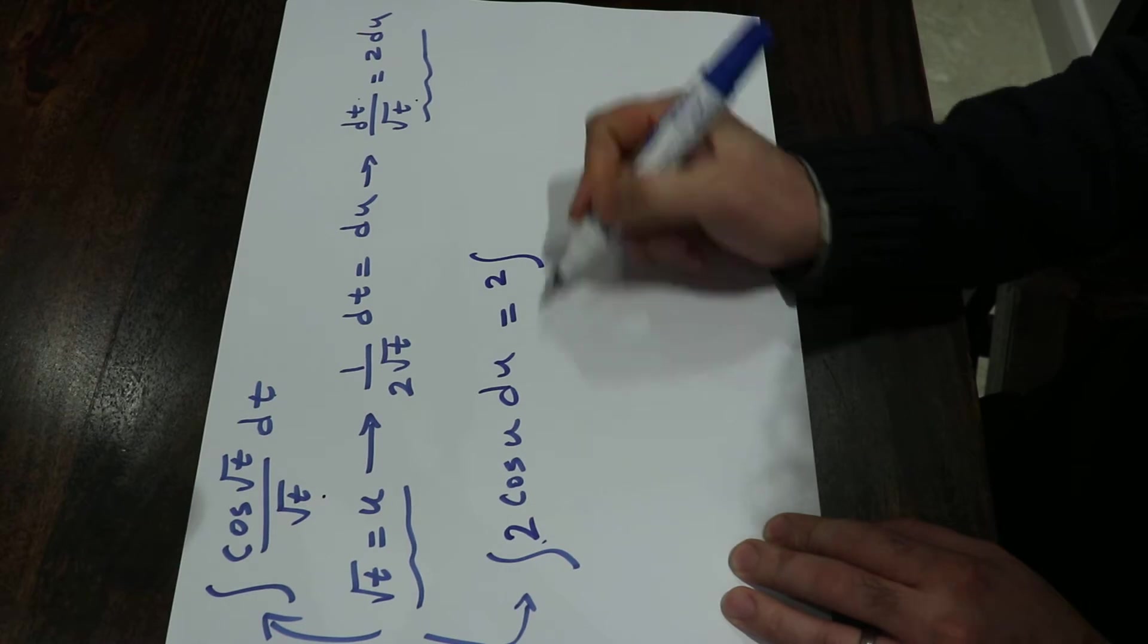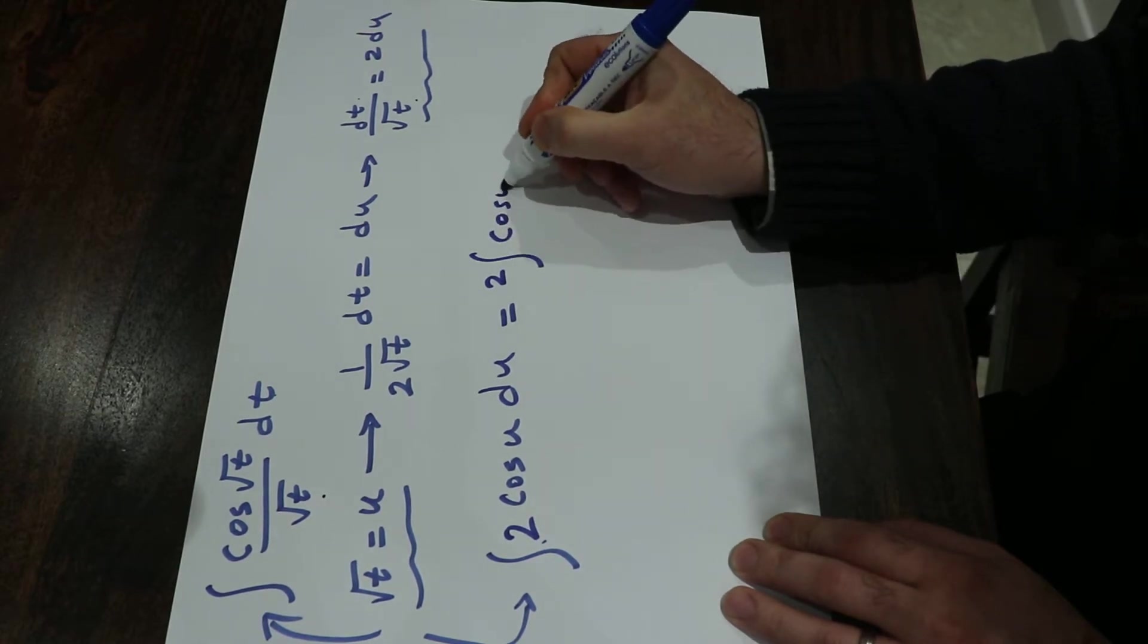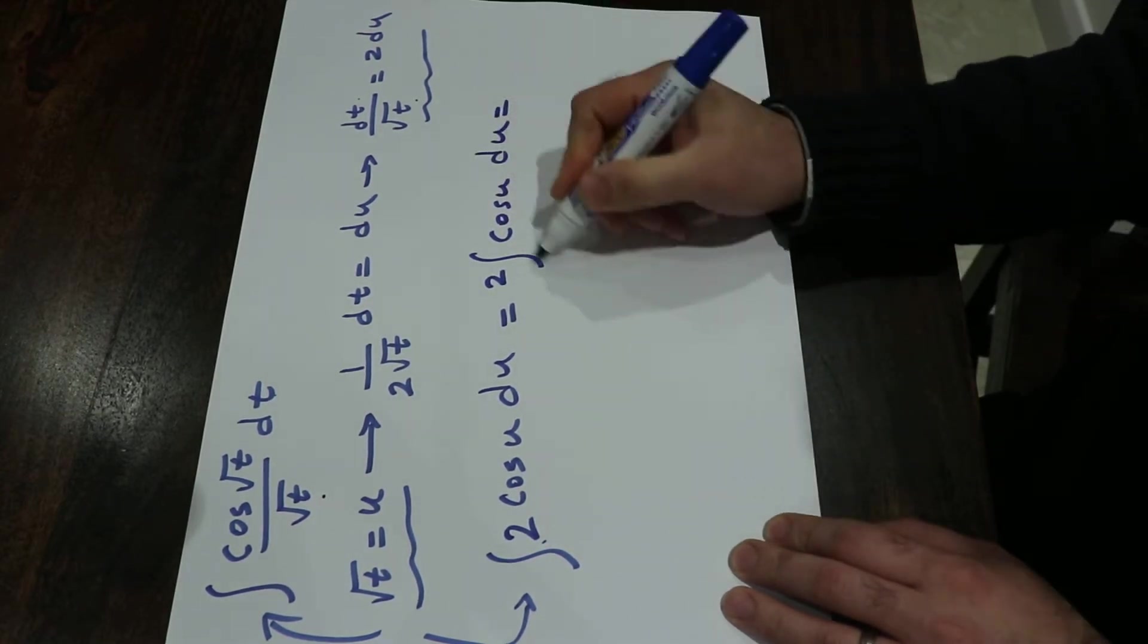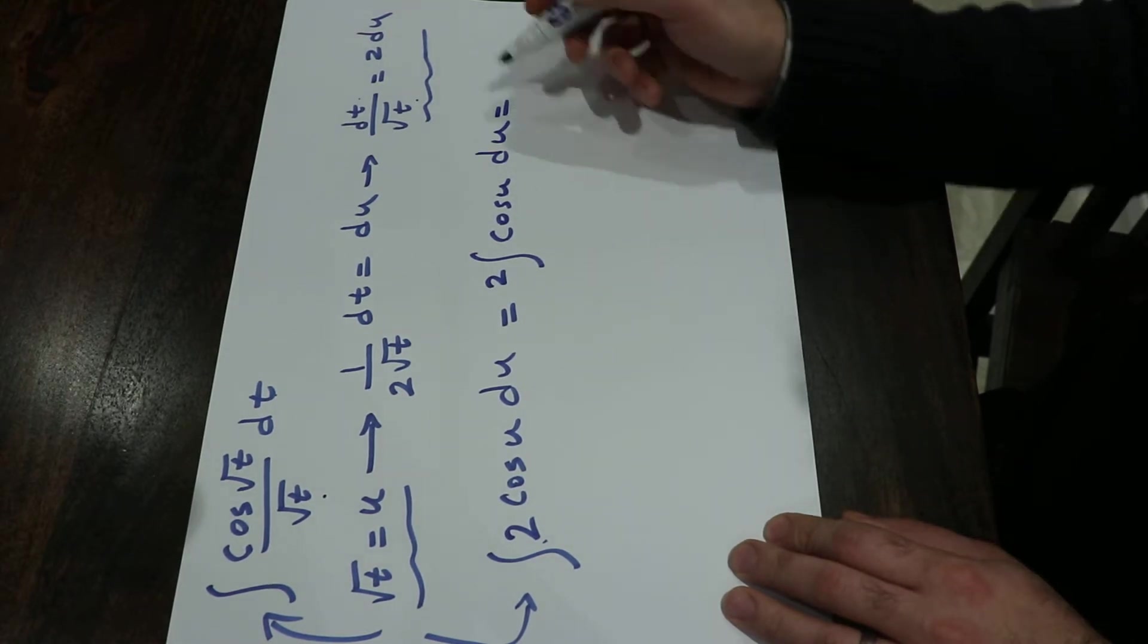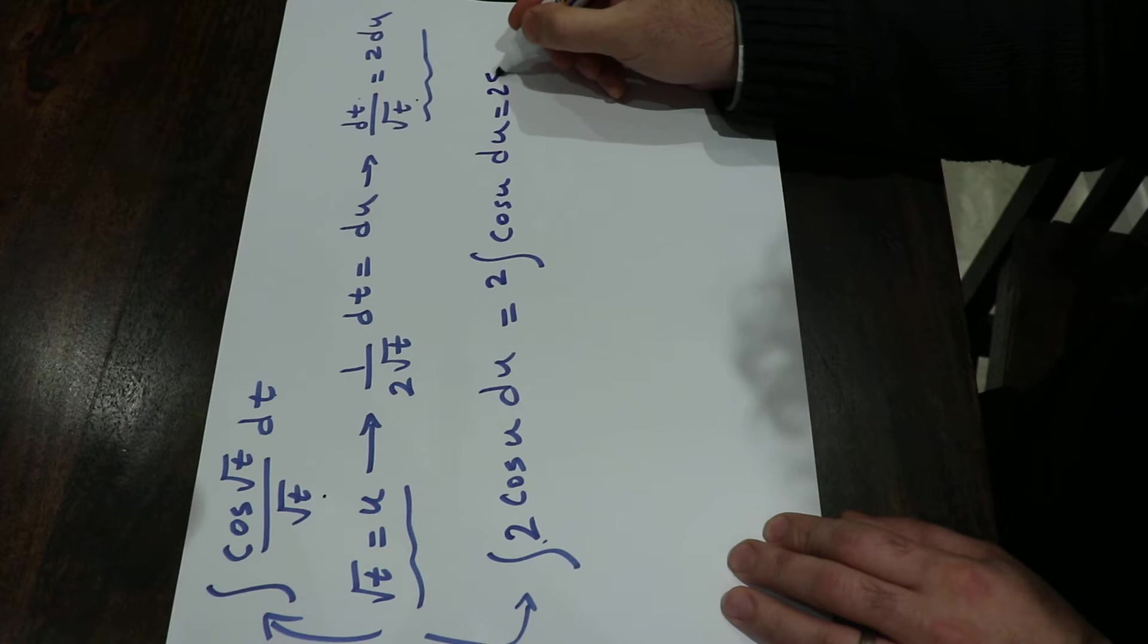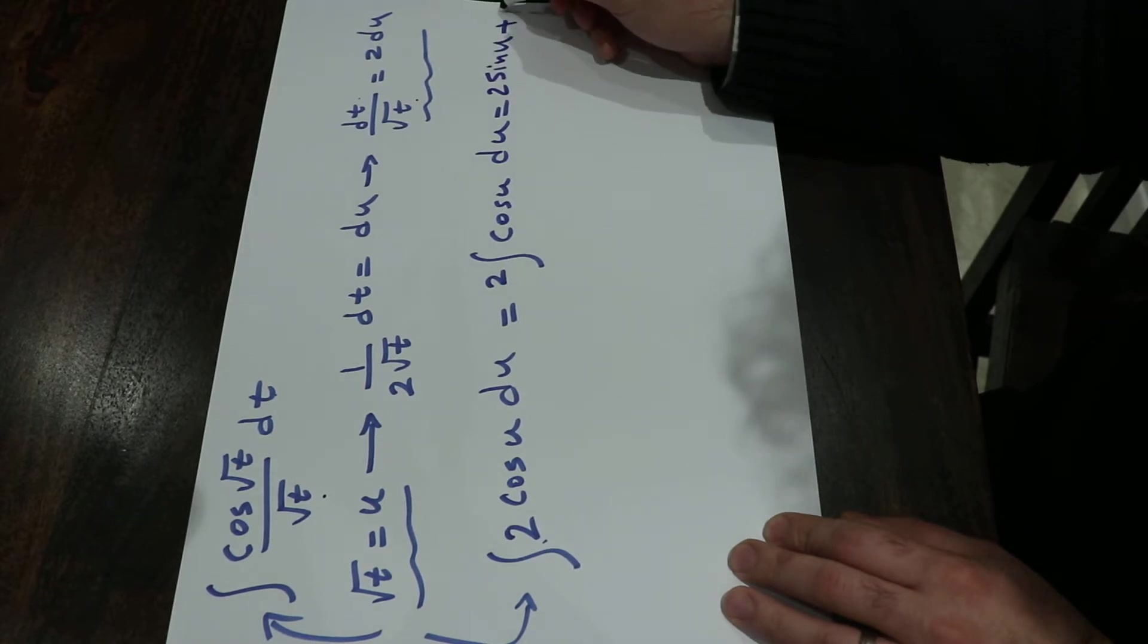And 2 is constant, so I can take it out of the integral, integral cosine u du. And integral cosine u du, from table of integrals, you know it is equal to 2 sine u plus c.